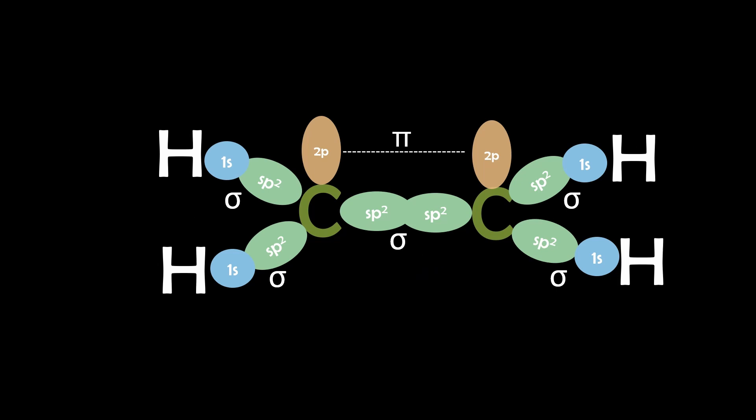So each carbon can form three sigma bonds and one pi bond, creating a structure that is both symmetric and energetically favorable.